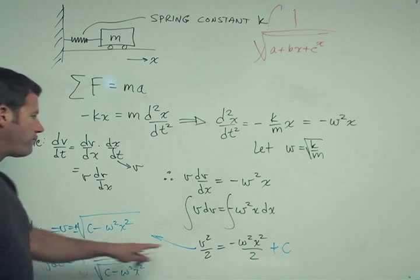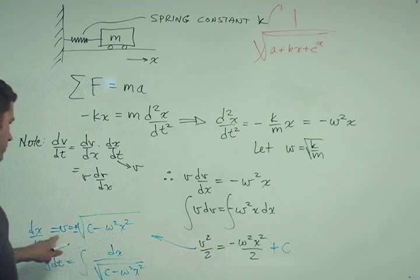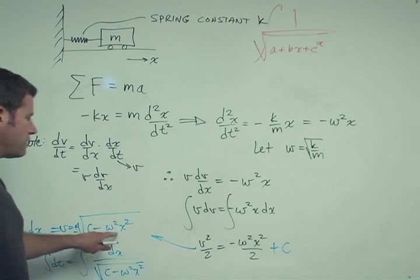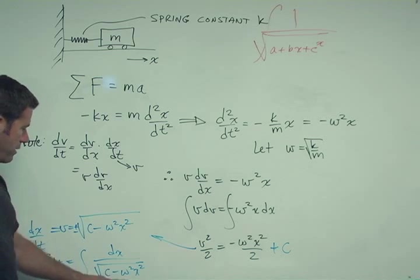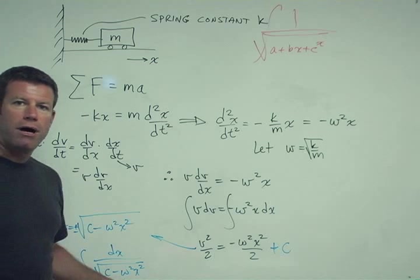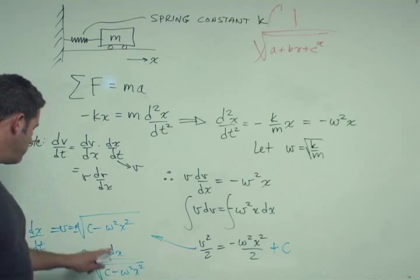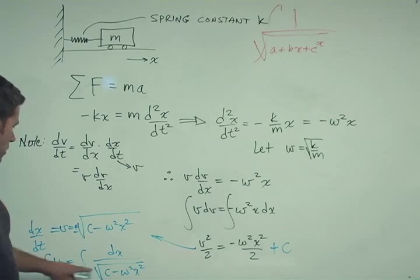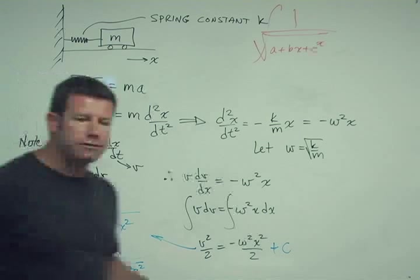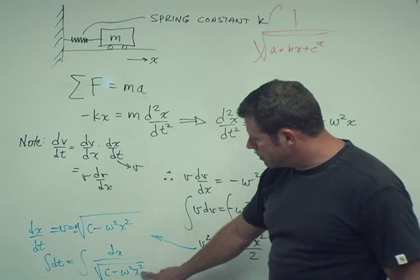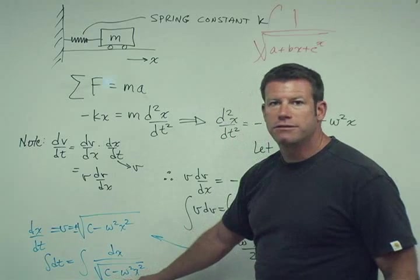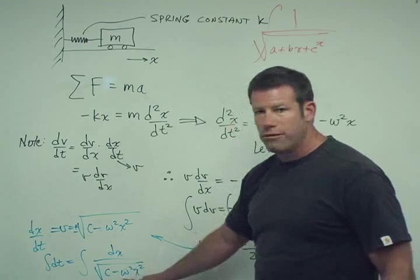And from this then if we solve for v, we get this square root of c minus w squared x squared. Now v we know is dx dt. So now we can separate again and integrate. And this now is how we get that square root of the polynomial in the denominator. It comes as a result of separating variables on this second integration. Now in this case, the polynomial only has an x squared term and a constant. It doesn't have an x term. That's a little bit simpler than what we had to face.